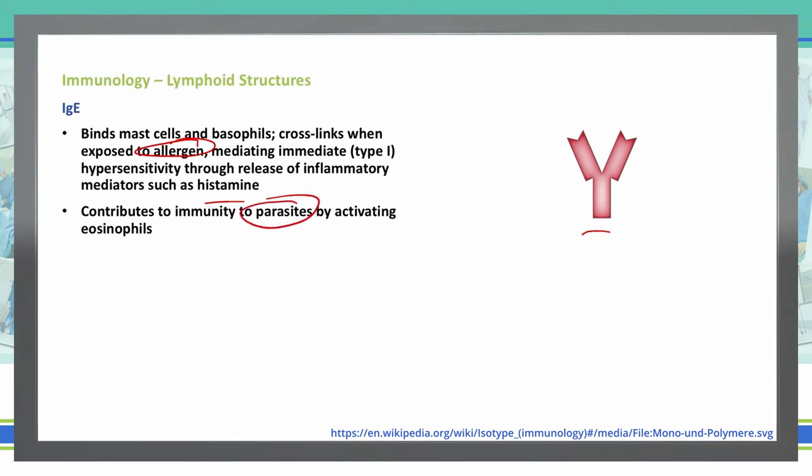One of the leading thoughts of why we're seeing so much increase in allergies lately is that in the United States, we have decreased parasites through treatment of water, treatment of food, better hygiene, and all that kind of stuff. So the IgE is not dealing with parasites as much, and so it has more of an affinity to allergens, increasing our risk of allergies.